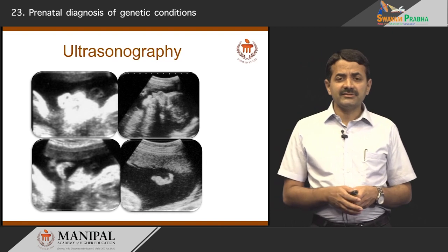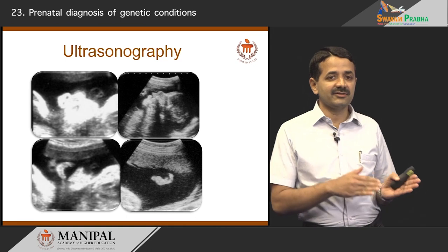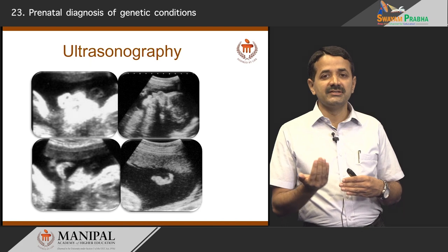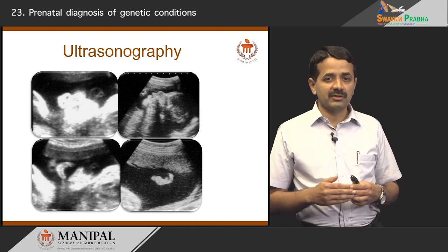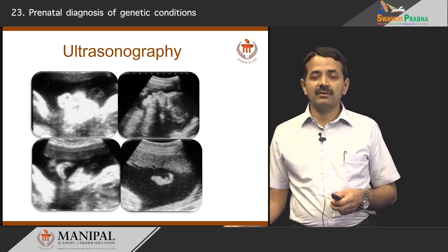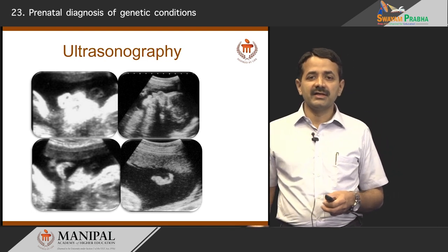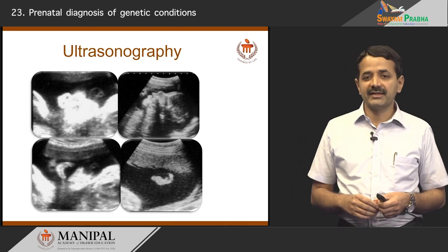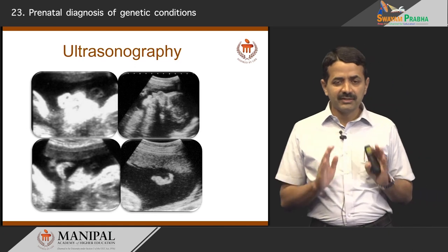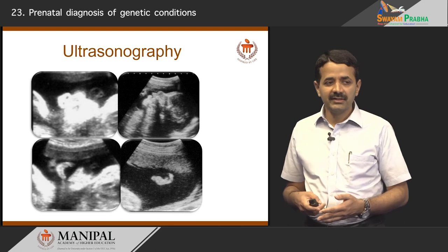With the advent of high resolution ultrasonography, you can see the fetus's face very well — the nostrils, mouth, lips, nose, and chin, as shown in the top right corner of the image on screen. You can also study the ears, as shown in the lower right corner. A good ultrasound machine with an expert ultrasonographer can detect most major congenital malformations, but remember, we cannot assess brain or muscle function by ultrasonography.